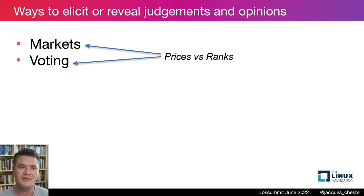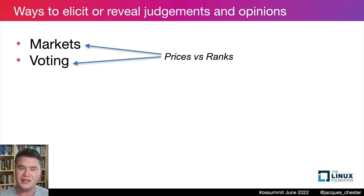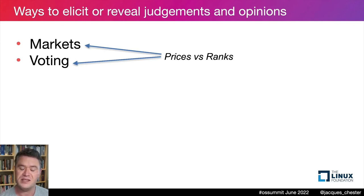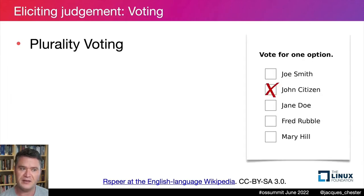Plurality voting is bad for two reasons. First, the recognizability problem: famous projects will zoom to the top, and every vote past those establishing a project's position is a wasted vote. Second, plurality voting limits us to the number of experts whose opinions are elicited — even if every single vote goes to a different project, we still wind up with a long tail of millions of projects never ranked, languishing in equal last place.